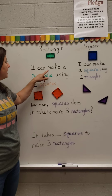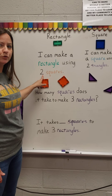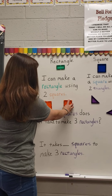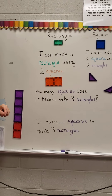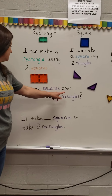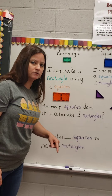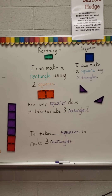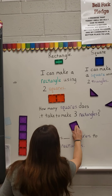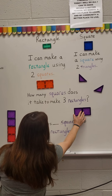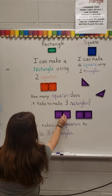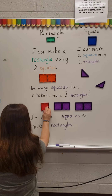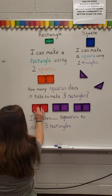So now we're going to come back down here to our rectangle. I can make a rectangle using two squares. I'm going to show you how to do that. We're going to take our two squares and put them together — and now we have a rectangle. How many squares does it take to make three rectangles? It takes two squares to make one rectangle. Two squares make one rectangle, four squares make two rectangles, six squares make three rectangles.